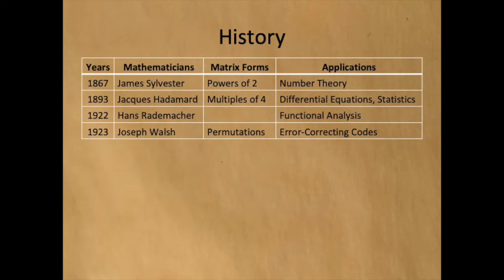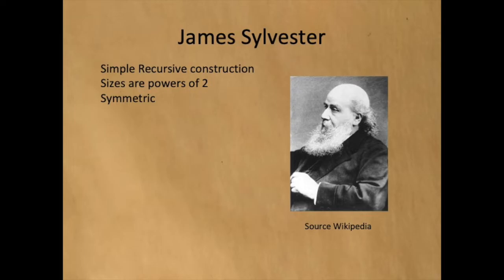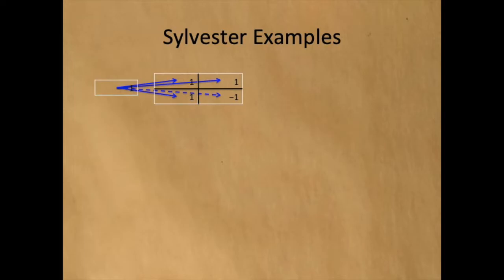These four mathematicians are credited with developing the Hadamard transform. James Sylvester created a simple recursive construction. He explored Hadamard matrices that are powers of 2, and his matrices are symmetric. Here is his process.